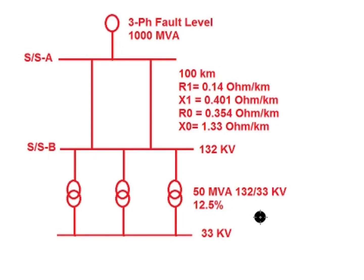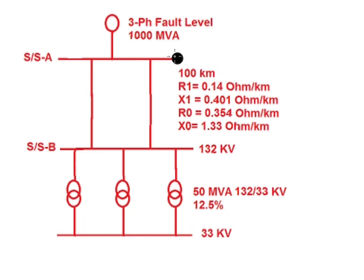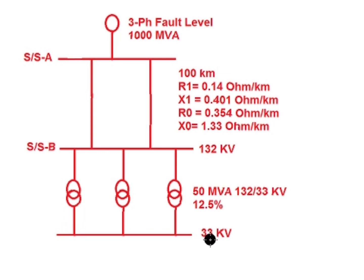Hello friends, today I will discuss about calculation of three-phase fault level for a particular substation. In this figure, substation A and substation B are connected via a double circuit line using a panther conductor. The line length is 100 km and substation A fault level is known — the three-phase fault level for substation A is 1000 MVA. In substation B there are three transformers, each 50 MVA, 132/33 kV, running under parallel condition. In this video I will discuss how to calculate the three-phase symmetrical fault at the 33 kV bus.